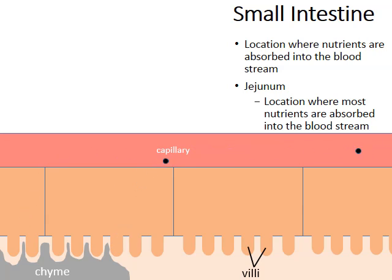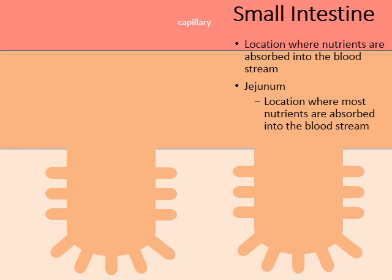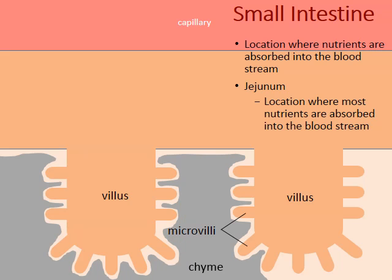There's another secret that the villi hold. When we zoom in even closer, we see the villi themselves have tiny projections called microvilli, which add even more surface area for the absorption of nutrients. As the soupy chyme passes through, nutrients pass into the capillaries surrounding the villi, enter the general circulation of the blood, and are carried throughout the body.